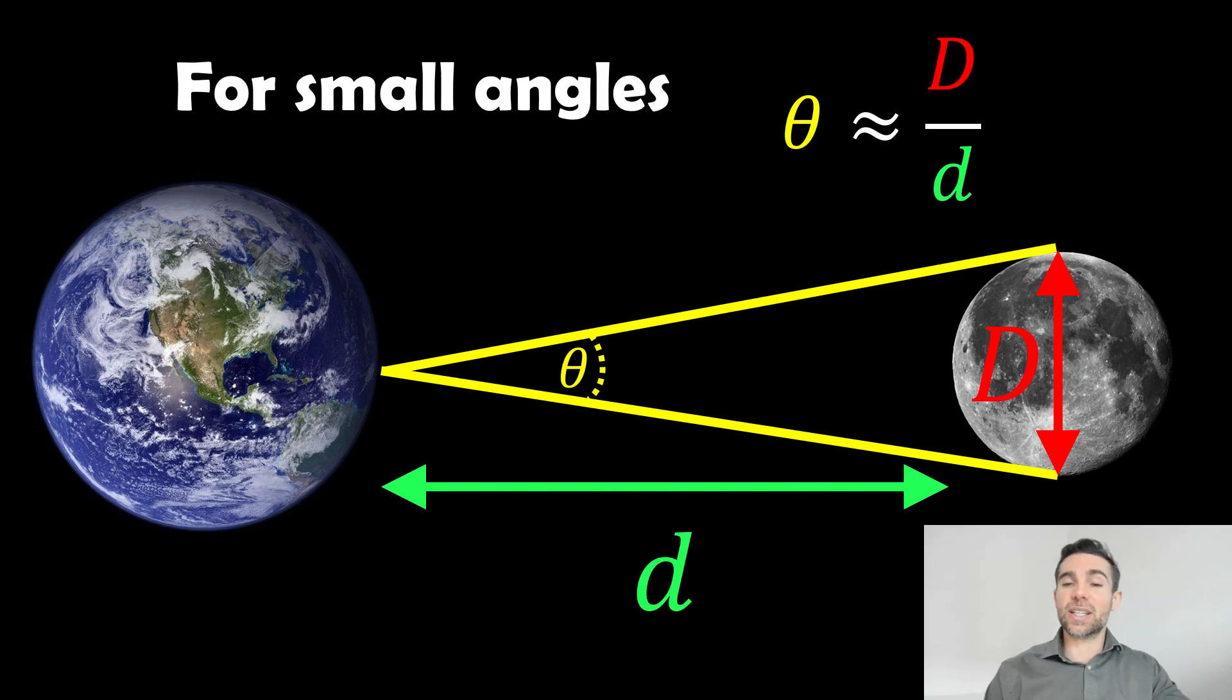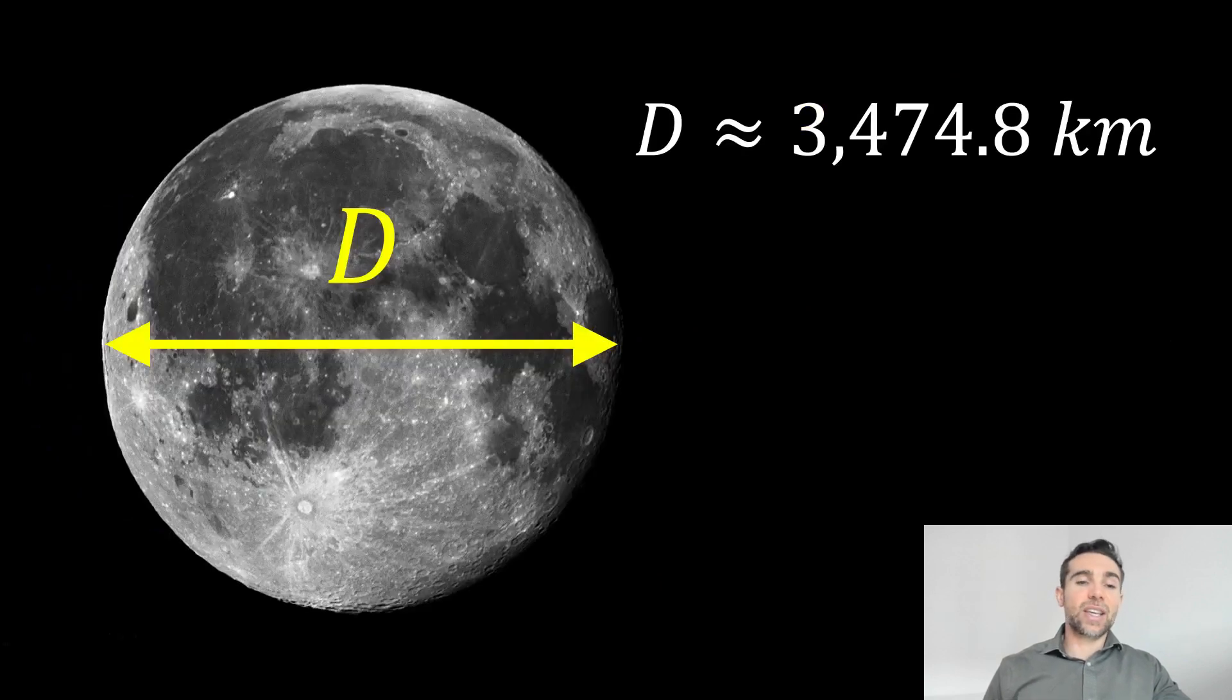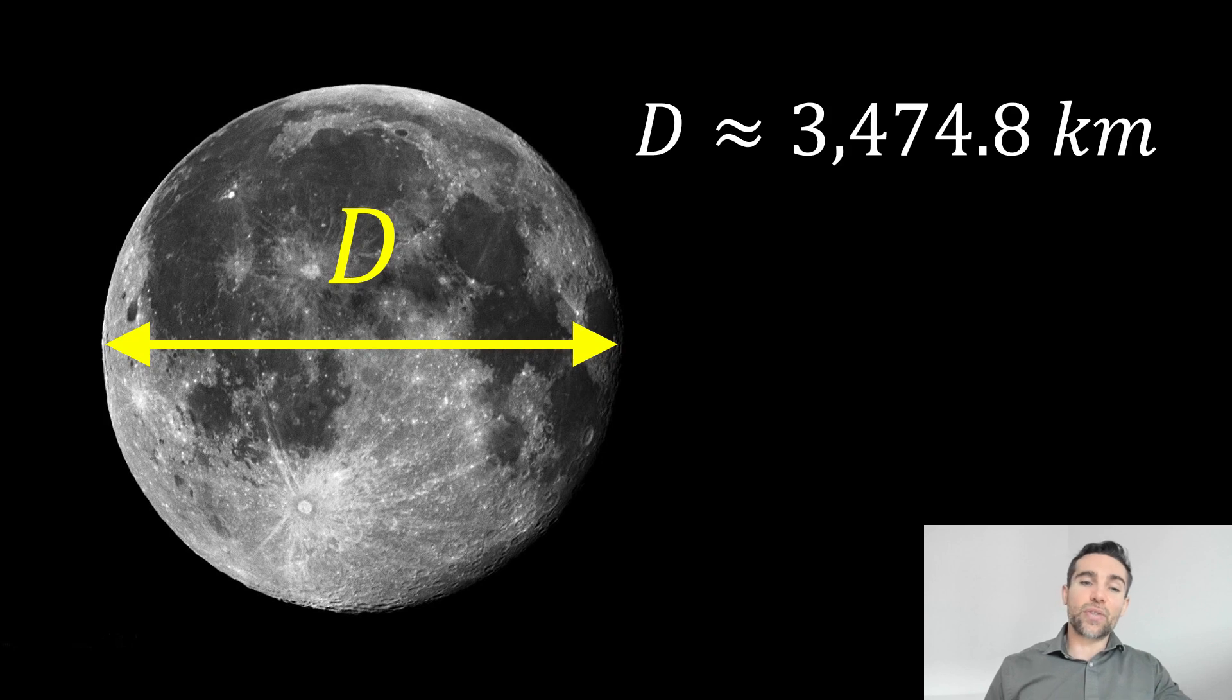The modern methods are using these lasers and looking for the time it takes for pulses to come back. But there are other ways, like the parallax methods, that would have been used more historically to get the distance. If we do that, you get a diameter of the moon of just under three and a half thousand kilometers.